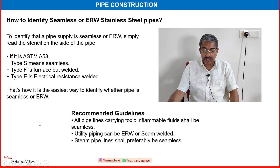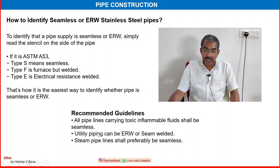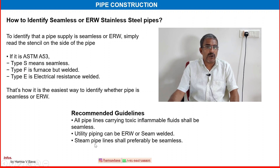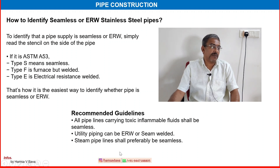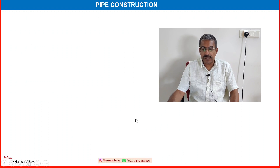Recommended guidelines: All pipelines carrying toxic or inflammable fluids shall be seamless. Utility piping — mainly water such as desalinated water, processed water, or effluent water — can be ERW or seam welded. Steam pipelines shall preferably be seamless, as they operate at high pressure and high temperature.